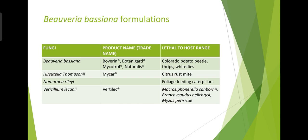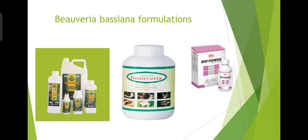Other examples include Hirsutella thompsonii and Nomuraea rileyi, and Verticillium lecanii, with product names Mycar and Verticella respectively. They are lethal to citrus rust mite, caterpillars, Macrosiphoniella, Brachycardus species, and Myzus persicae. These are the commercially available Beauveria bassiana and other fungal formulations.